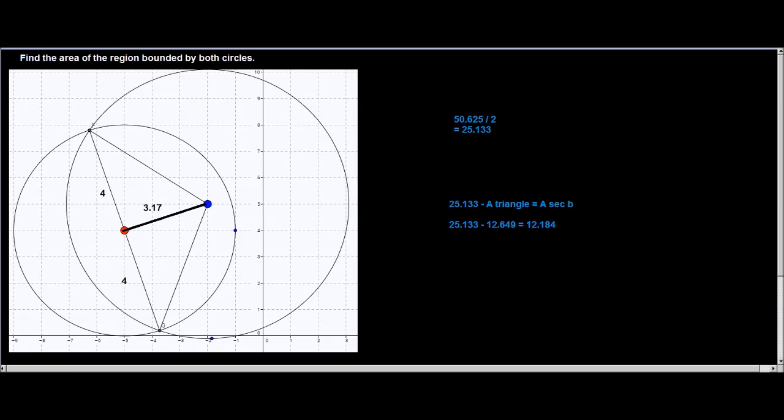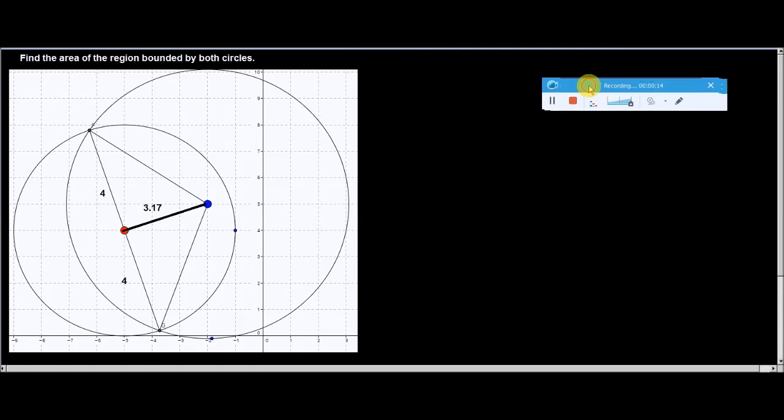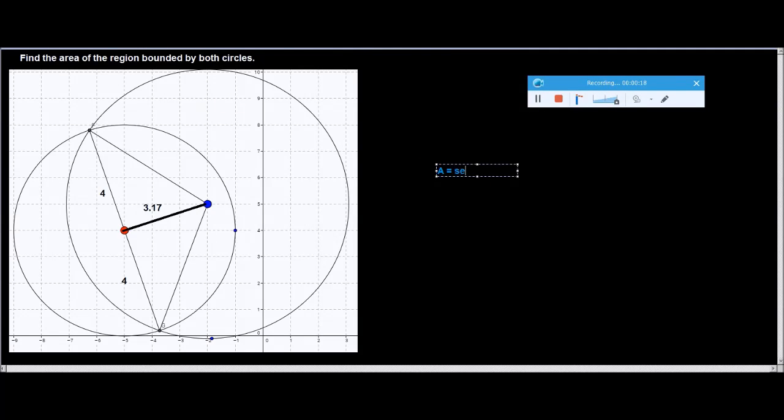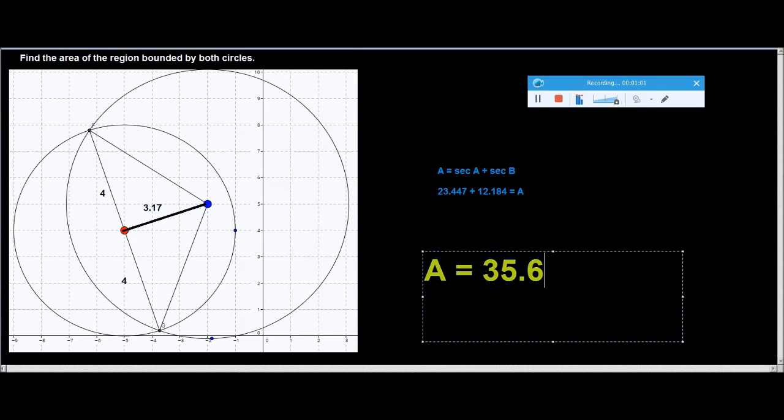Finally, now we have the sub-areas to find the area of the overlapping circles, which equals sector A plus sector B. That's 23.447 plus 12.184. This equals the area of overlapping circles. The final answer is 35.631. We're done. We finally found the area of the region bound by both circles. The area is 35.631 units.